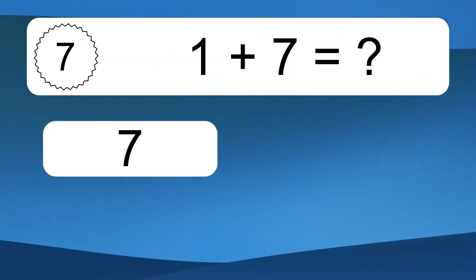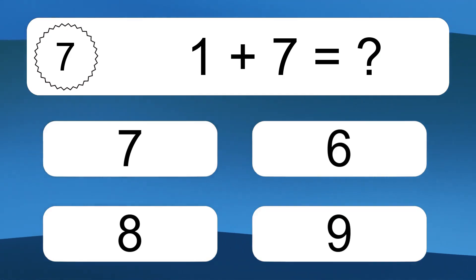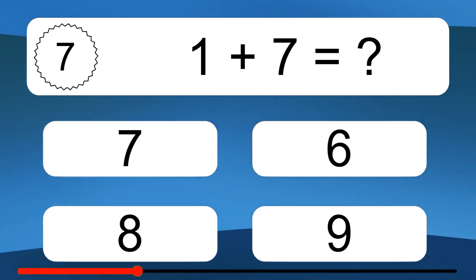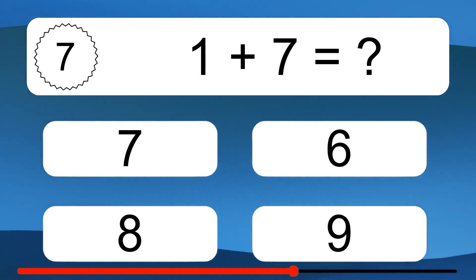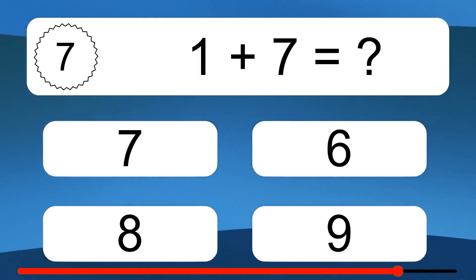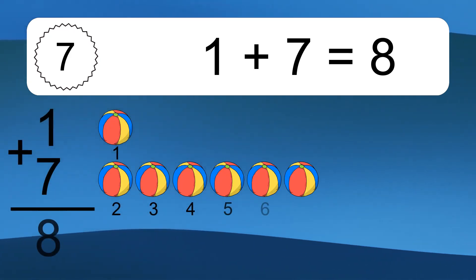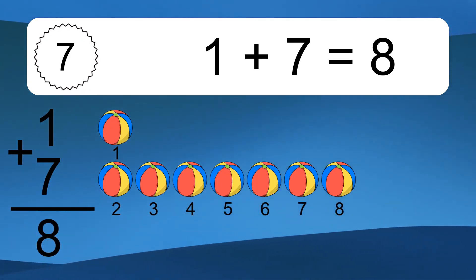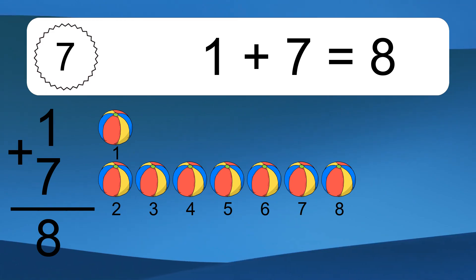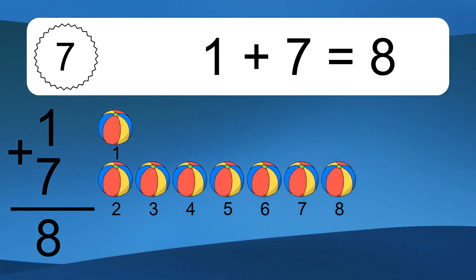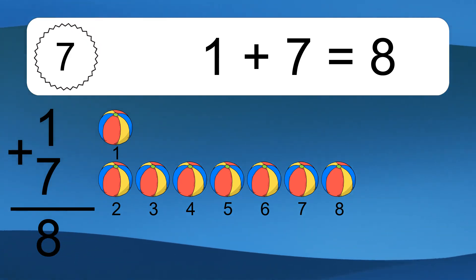1 plus 7 equals what? 1 plus 7 equals 8. Let's count it. 1, 2, 3, 4, 5, 6, 7, 8.